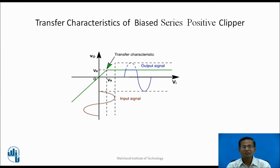Transfer characteristics of biased series positive clipper: During positive half cycle, as long as Vin is less than Vr, diode D is forward biased and acts as a closed circuit, so as Vin changes, V0 changes. When Vin crosses the reference level, diode D becomes reverse biased and acts as open, therefore output is equal to Vr. And for the complete negative half cycle, Vin is less than Vr, diode D is in conducting state, so output follows the input.